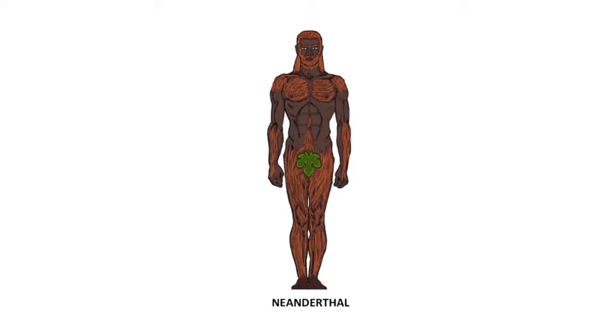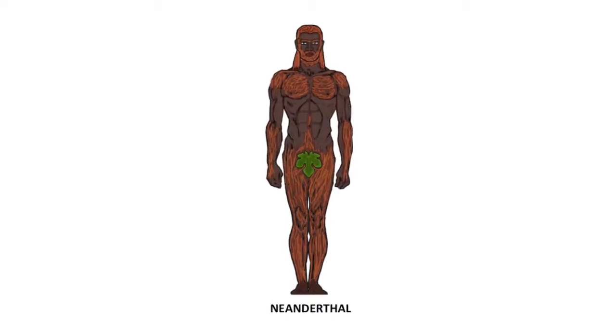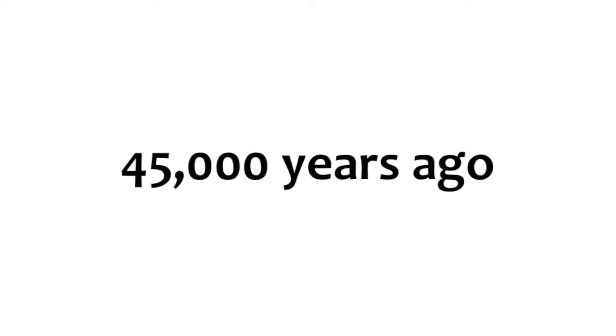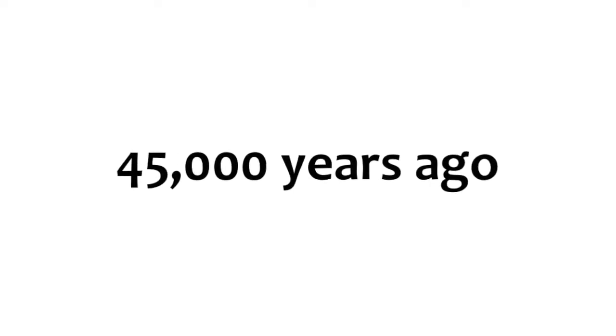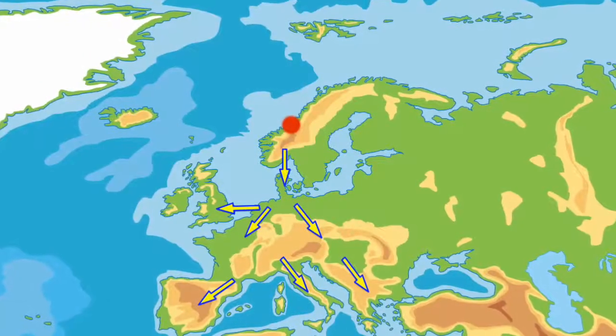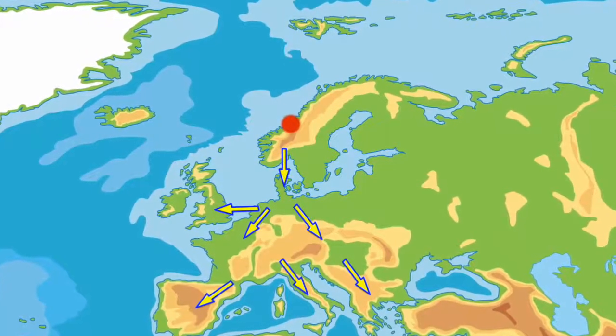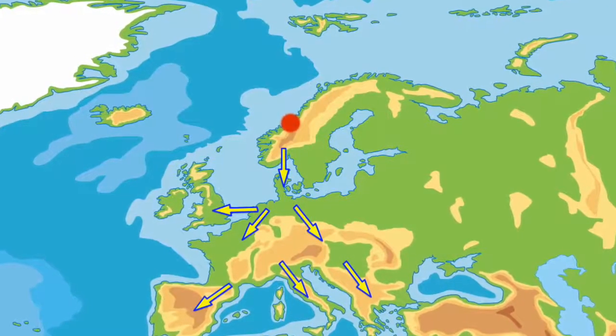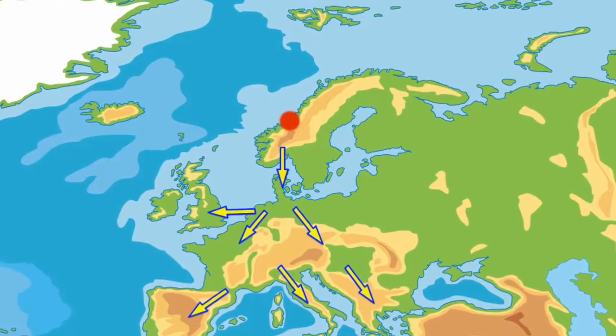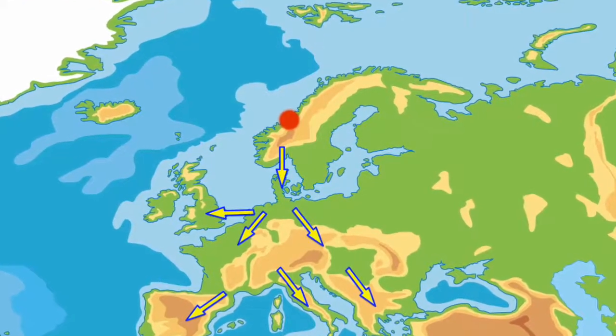Neanderthals were spread across Eurasia during this period. 45,000 years ago the interglacial period was coming to an end. Extreme cold was working its way down from northern Europe, and the Nordic breed there had no option other than to move south.